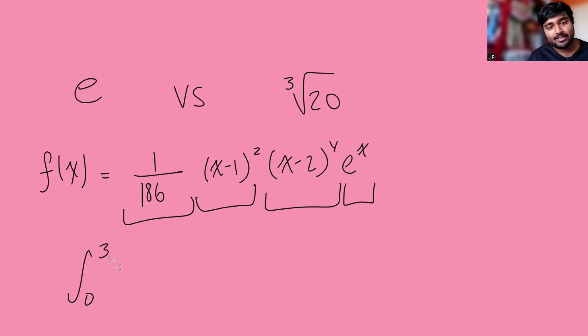And so, therefore, if I integrate this function over any interval, and I'm going to choose 0 to 3, this should be at least 0, in fact, strictly positive.